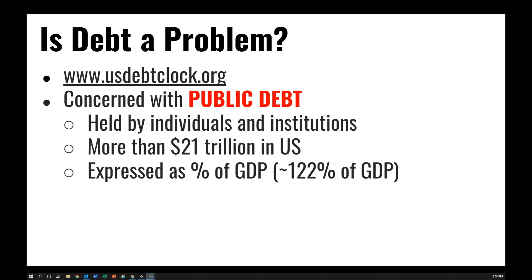That may appear to be a major problem for the economy — maybe it is, maybe it isn't. Primarily, we're talking about public debt — debts that the government holds to individuals and institutions that it must pay back. As of the reporting here, we have $21 trillion in public debt in the United States. Typically, we express debt as a percentage of GDP; in today's world, it's about 122% of GDP. There is also about $7 to $8 trillion in government debt that the government has borrowed from Social Security. We're focused mostly on public debt held by individuals and institutions.